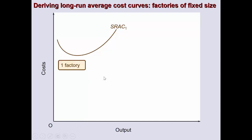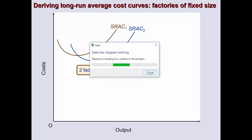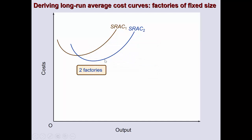So why not build the next factory? With a second factory, we can increase capacity or scale, which then allows us to reduce costs further. From that point onwards, we again see a further decline in costs. However, with two factories, we again face diminishing returns to inputs in the short run, which causes short-run costs to increase again.